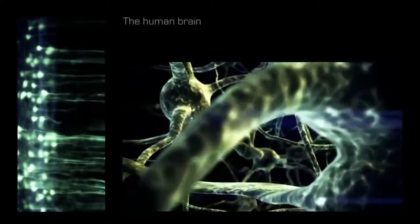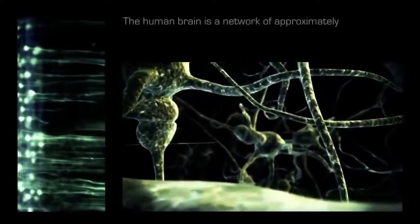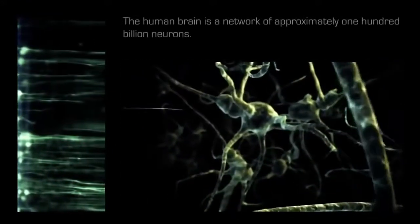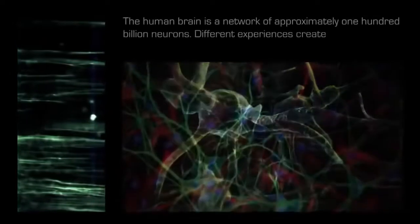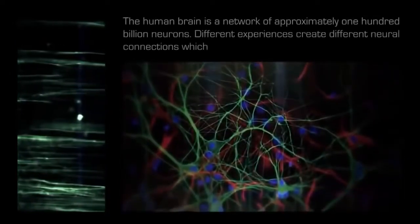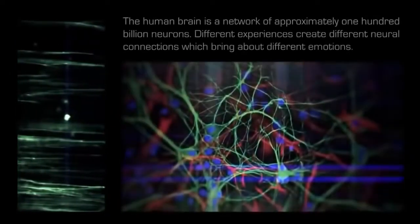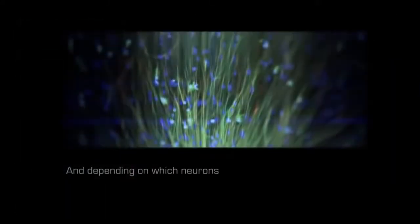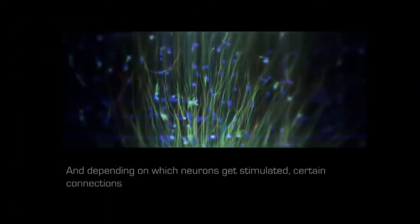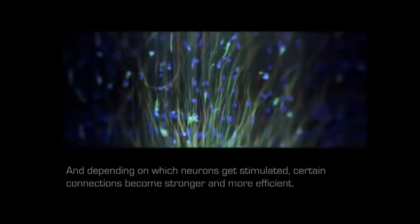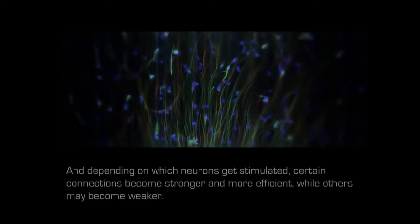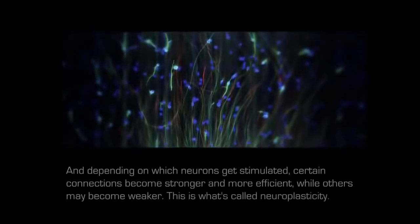The human brain is a network of approximately 100 billion neurons. Different experiences create different neural connections which bring about different emotions. Depending on which neurons get stimulated, certain connections become stronger and more efficient, while others may become weaker. This is what's called neuroplasticity.